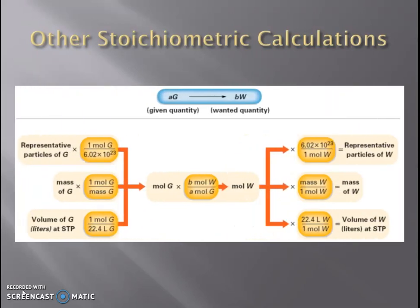We can use that same exact process for all the other ways to relate different substances to different measurements. If you have representative particles, change those into moles, then use the mole ratio to get to representative particles of another substance. You can go mass to mass as we saw, or take a volume of a substance, change that into moles, use those moles to relate to another substance's moles, and then back out to volume — any mix and match. But in every single possibility, you need to go through moles and through that mole ratio from the balanced chemical equation.